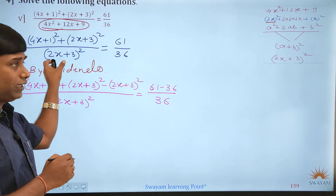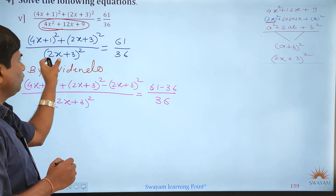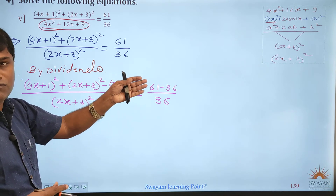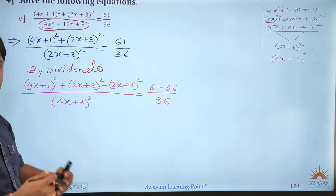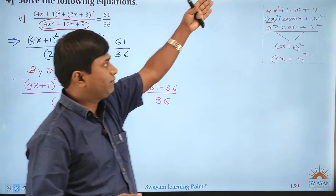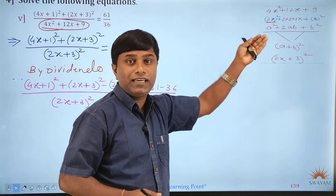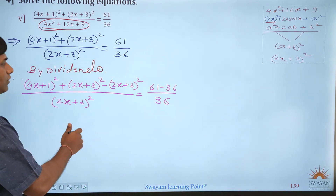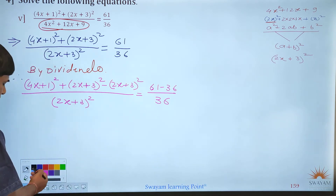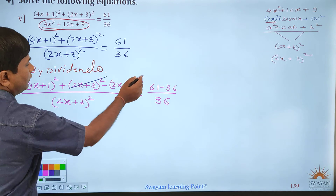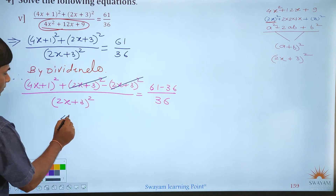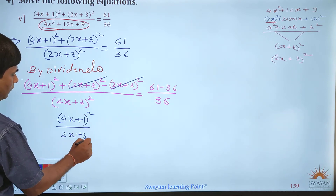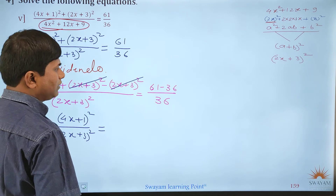How did we convert 4x² plus 12x plus 9 to (2x+3)²? We converted a² plus 2ab plus b² into (a+b)². Then by dividendo, the (2x+3)² terms cancel, and what remains is: (4x+1)² divided by (2x+3)² is equal to 61 minus 36 over 36.